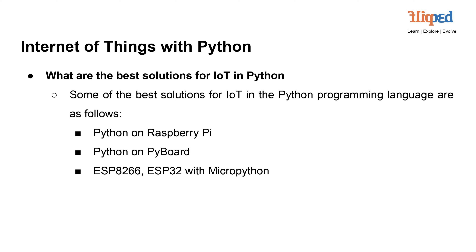Some of the best solutions for IoT in Python are: Python on Raspberry Pi. Raspberry Pi is a popular single-board computer widely used in IoT projects. Python's compatibility with Raspberry Pi makes it an excellent choice for developing IoT applications on this platform. Python allows developers to access GPIO (general-purpose input/output) pins and interact with sensors and actuators easily.